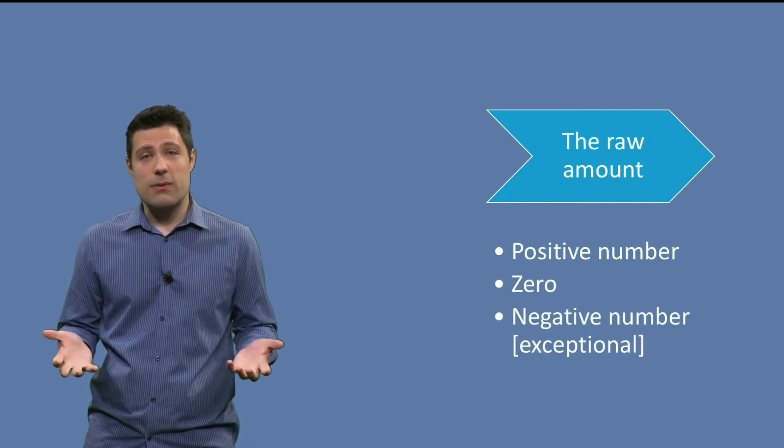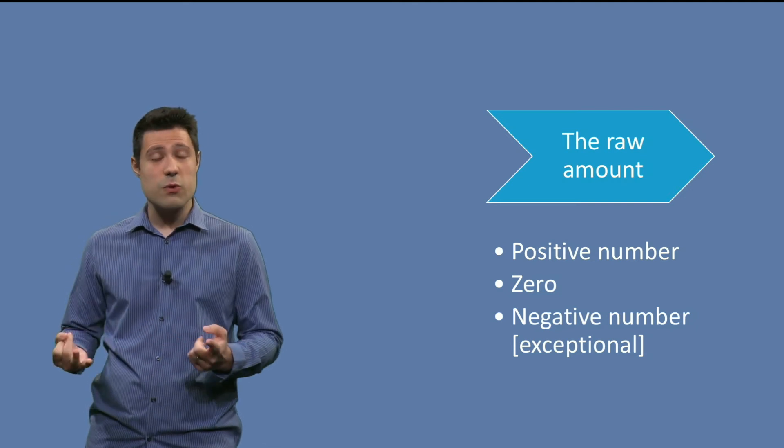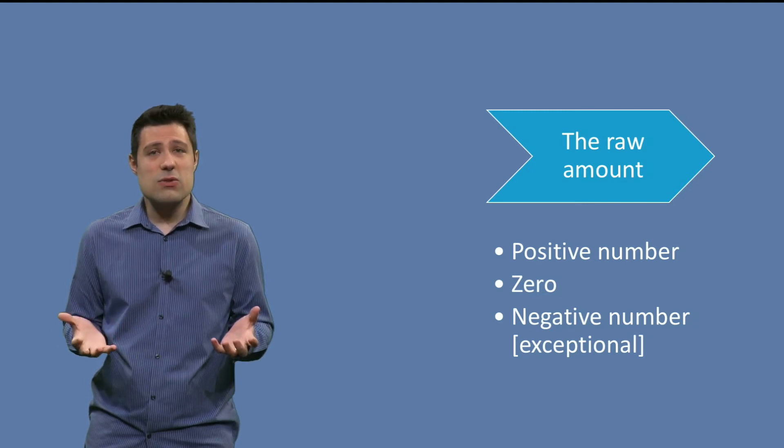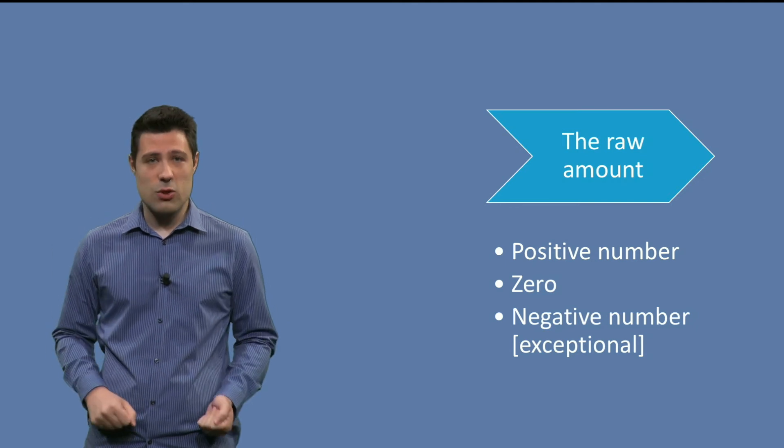And we have the amount. It can be a positive number like 100, it might be zero for some reason, or in an exceptional case it can be negative. But it doesn't make sense to have an amount be negative. But maybe that happens. And this is an exceptional behavior.